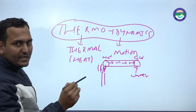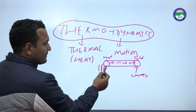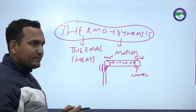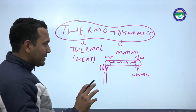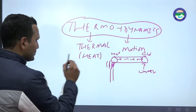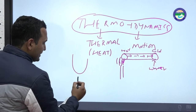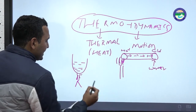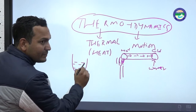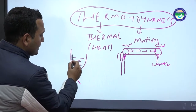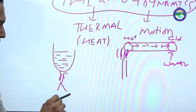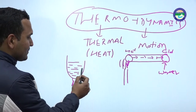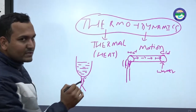Basically, thermal means heat, and heat is a type of energy. Here we see heat energy flowing from one part to another. For example, you use energy in making food and warming water in your kitchen using gas. The heat flows into the water, warming it. Thermodynamics discusses what heat is supplied and how much heat flows in such processes.